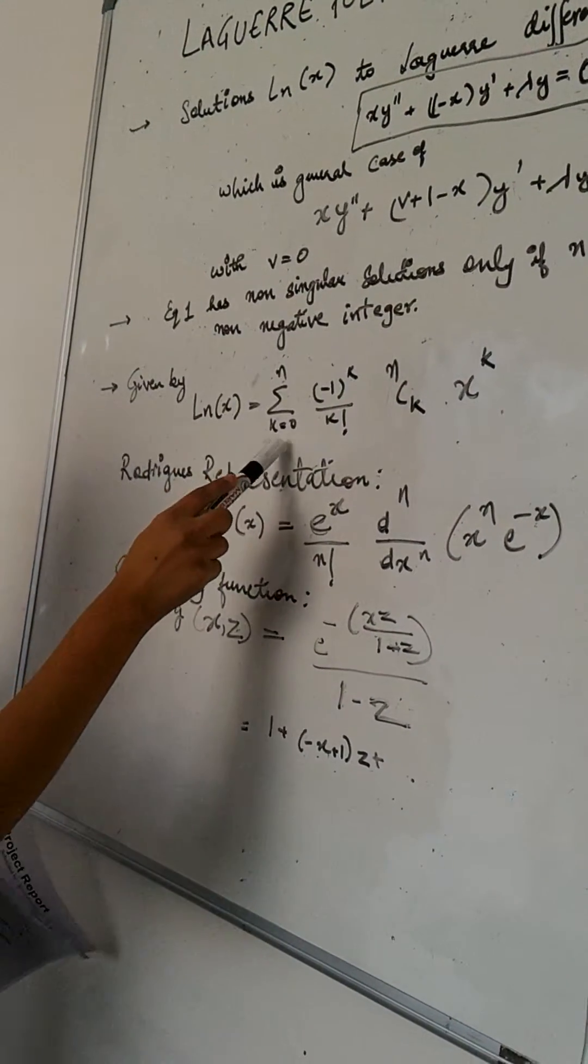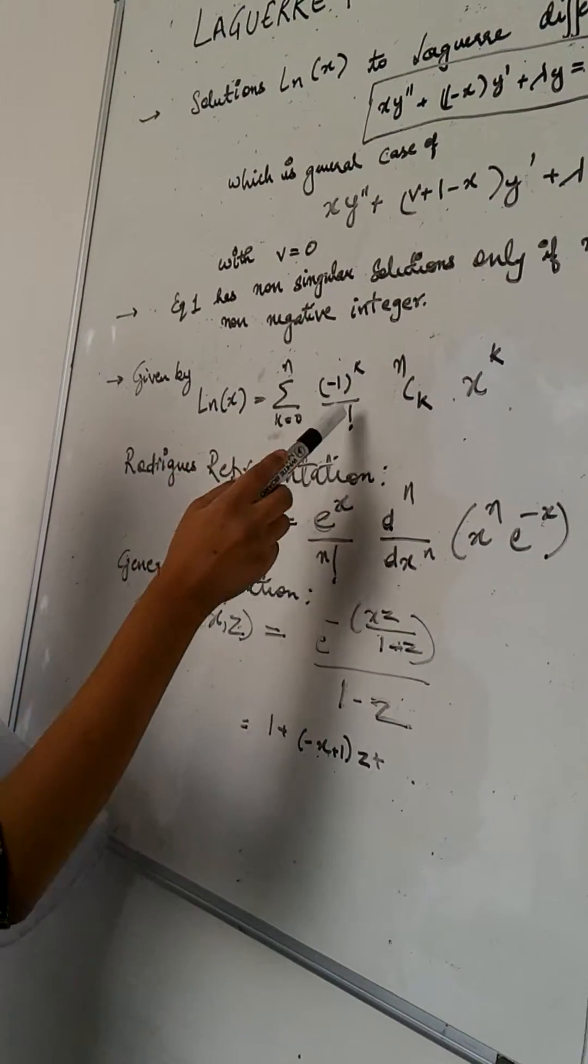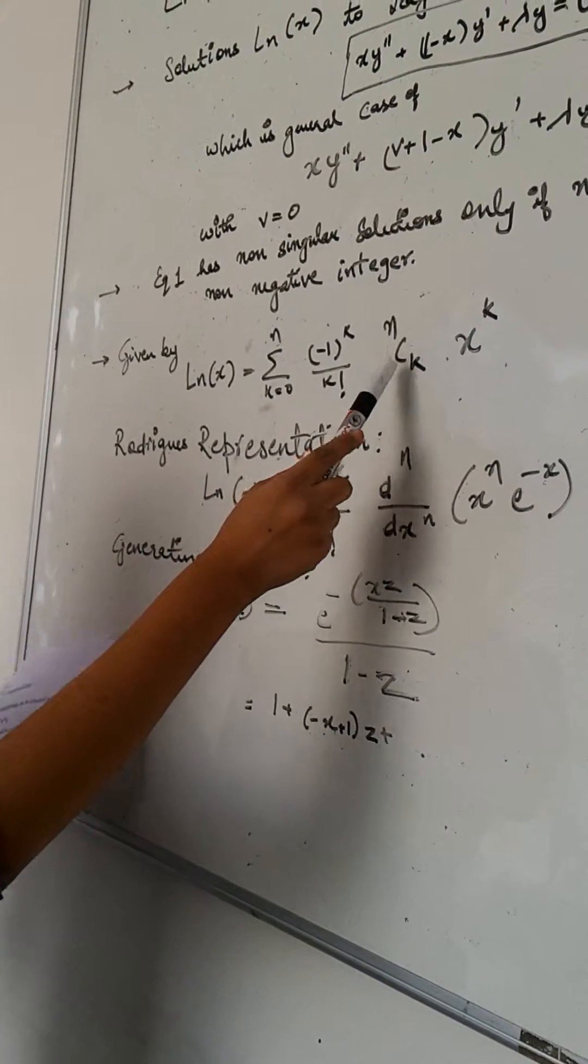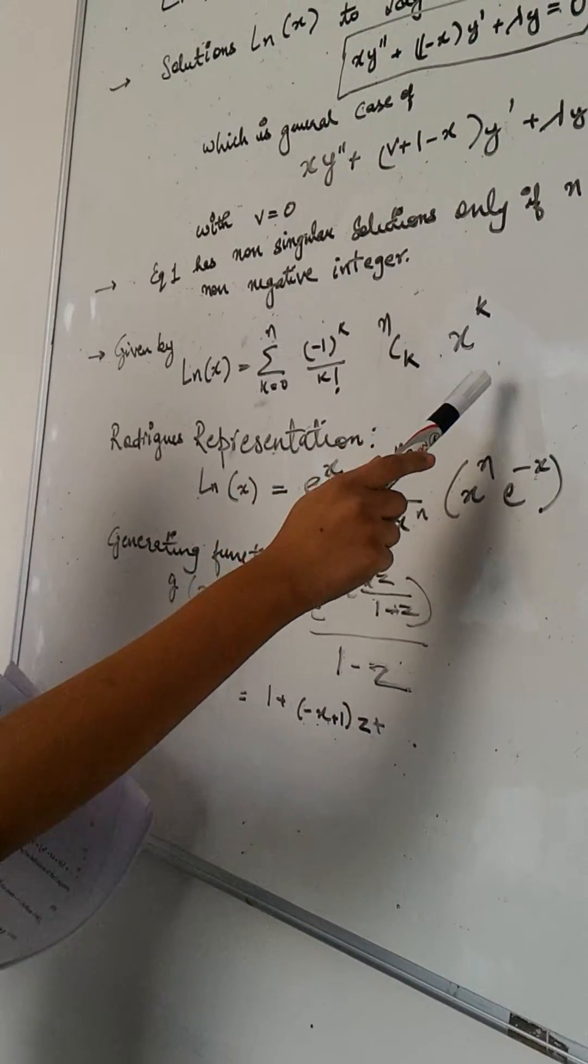These solutions are given by a sum: sigma k equals 0 to n, (-1)^k divided by k factorial times nCk times x^k.